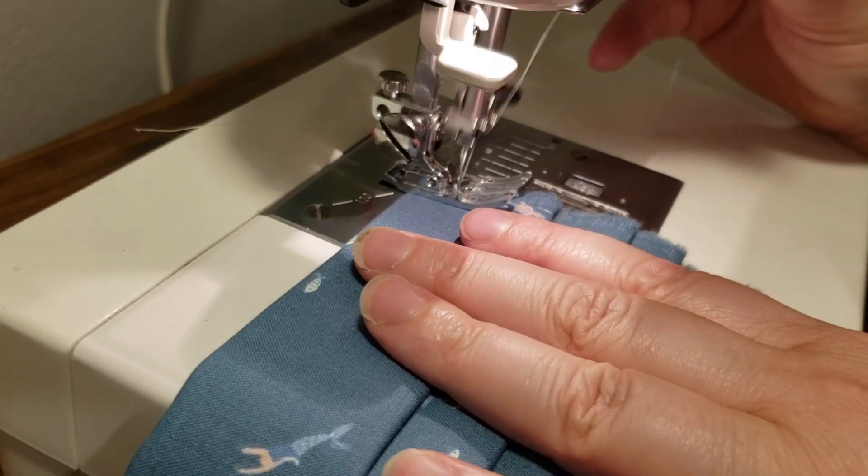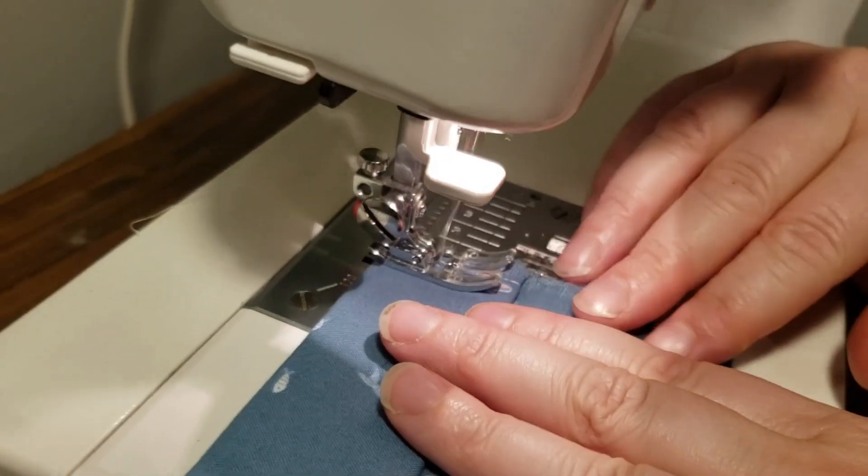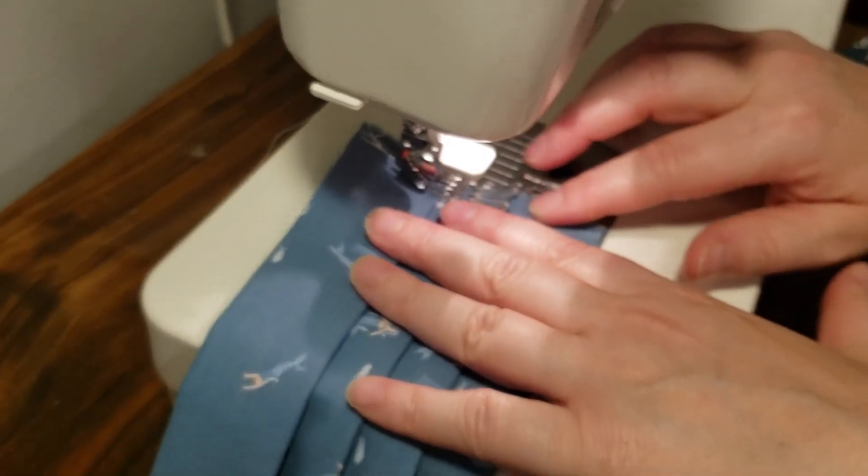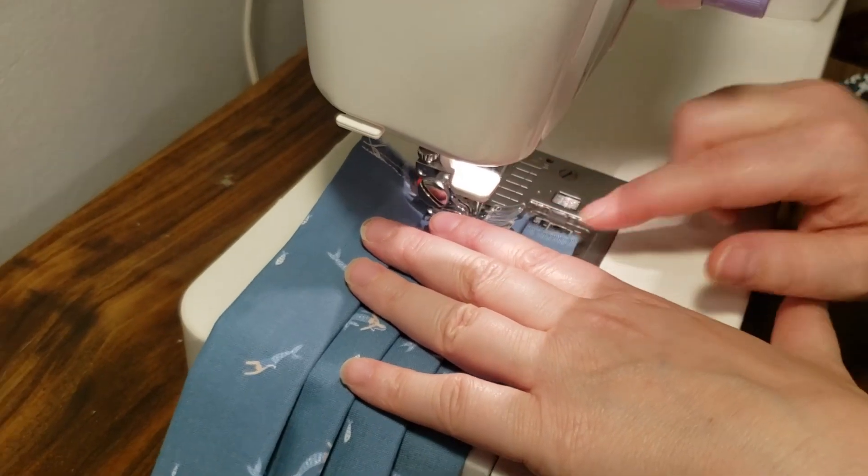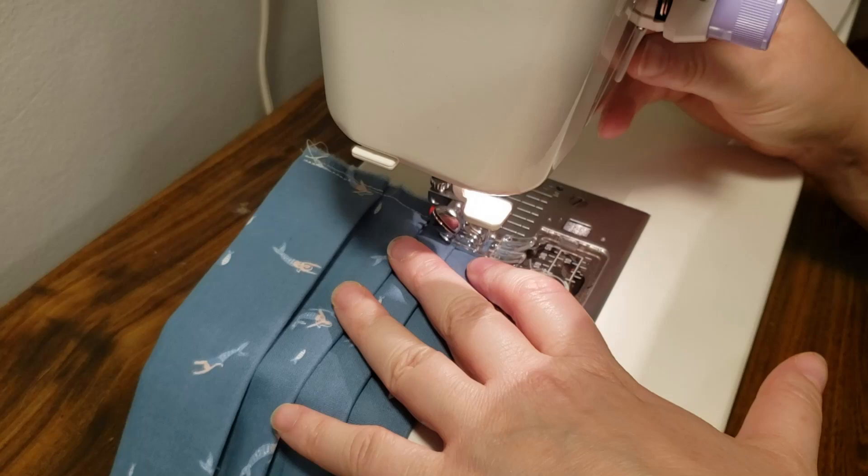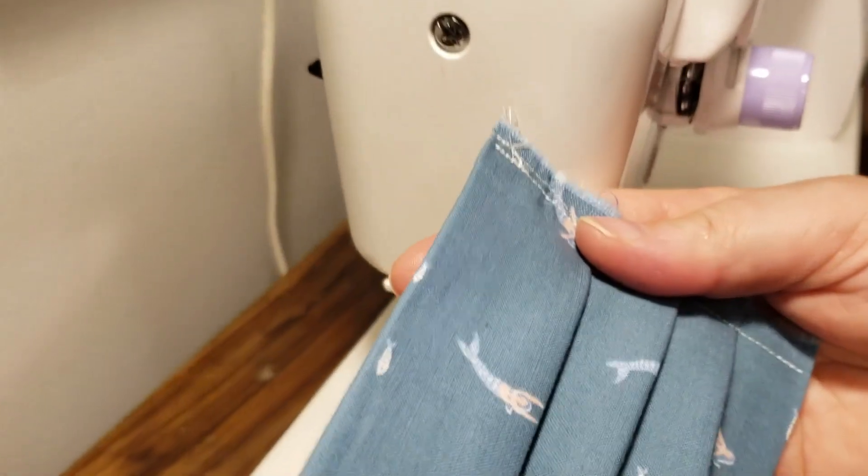But I always do my backstitch first, make it nice and strong, and then just go right down over the pleats. Make sure that as you go, the material isn't stretching and the pleats aren't coming out. So you just kind of have to go slow and then backstitch again and you've got this great pleated edge.